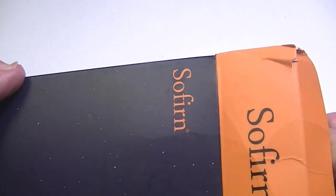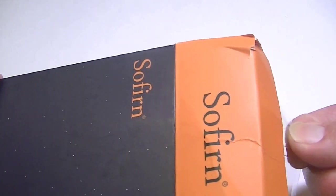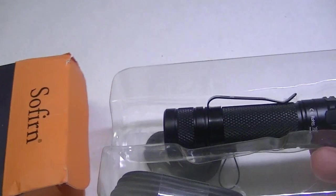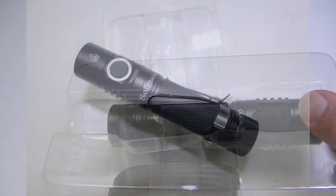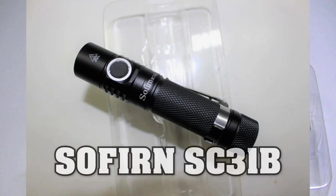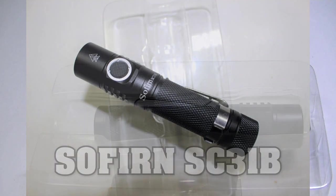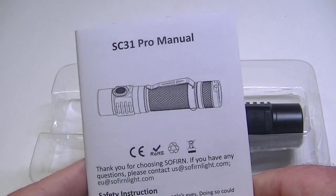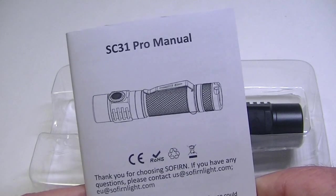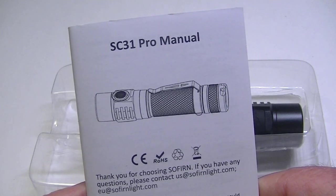This light does have differences between the first SC31. There are some differences between this light and the other. The main one being that it's brighter - this has a top output of 2000 lumens and the original SC31 was a thousand lumens.